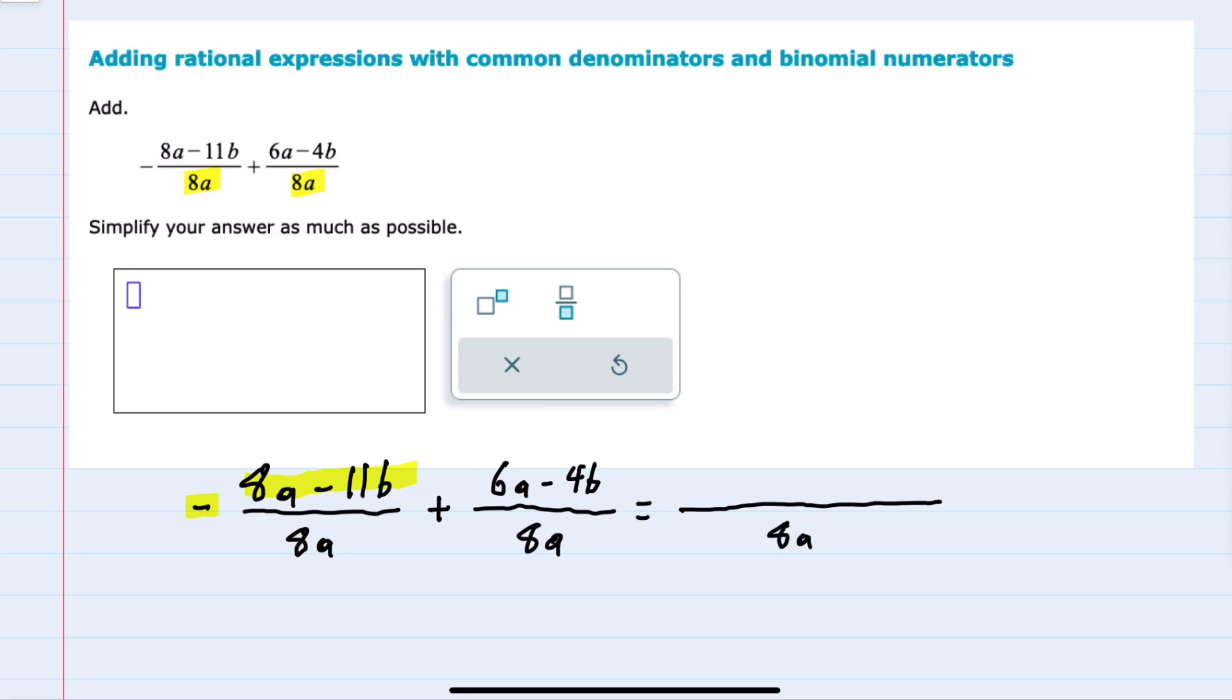I'll combine this into just one fraction where the numerator starts with a minus that will be applied to the 8a minus 11b. That's our first numerator. And then since we have addition, I can write the second numerator as is. So it'll just be a plus 6a minus 4b.